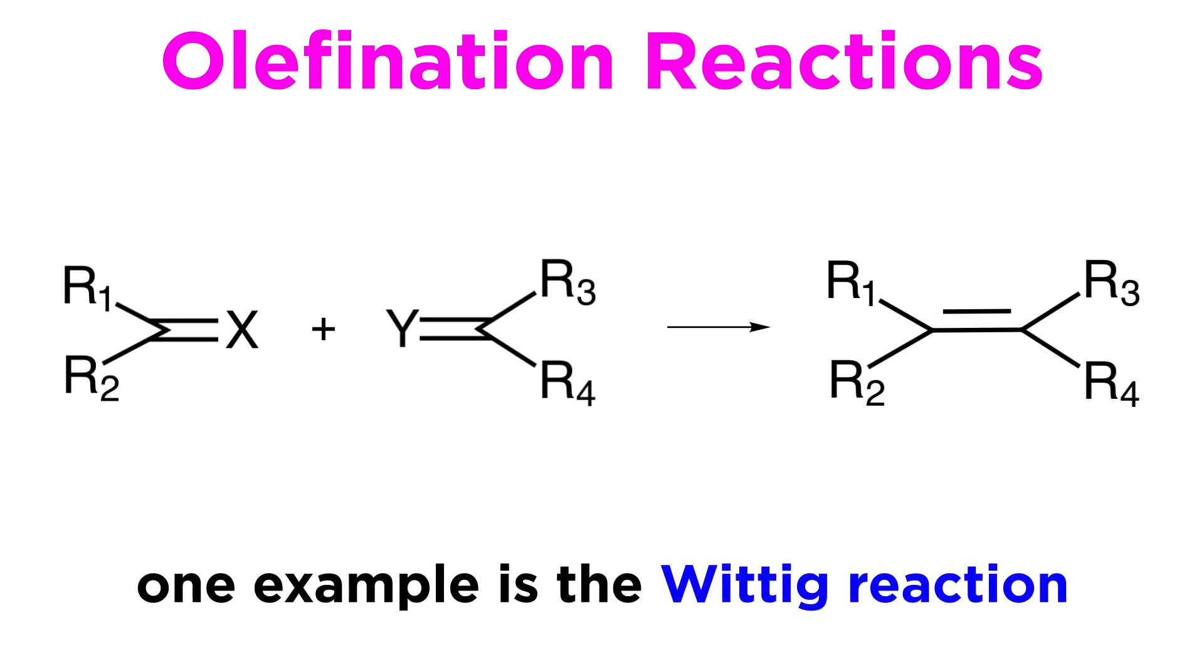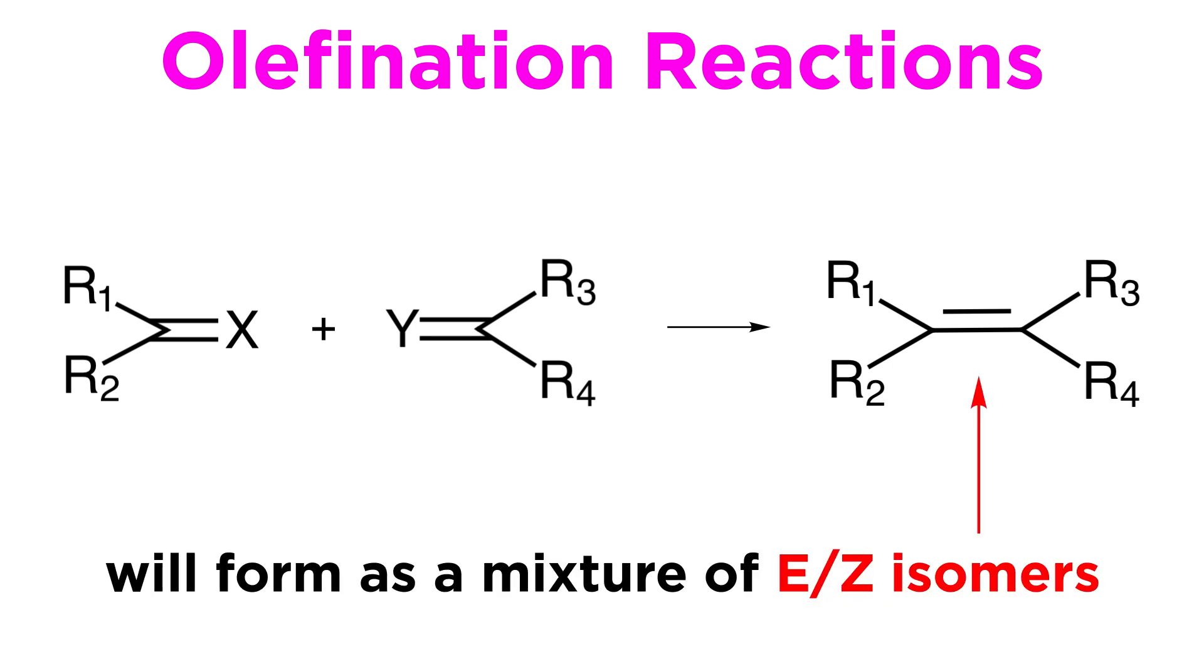We may immediately recognize that one of the first name reactions we learned in this series, the Wittig reaction, is such an olefination reaction. We will likely recall that the product, in general, will exist as a mixture of E and Z alkenes. And indeed, one important theme in this area of research is E or Z selectivity, how to achieve it, and which parameters control it.